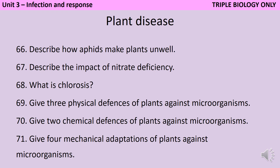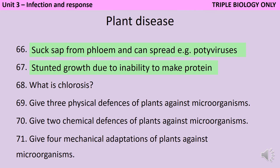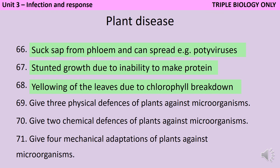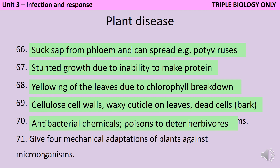Aphids make plants unwell by sucking the sap from their phloem, leaving the plant with less sugar, and also by spreading certain viruses like potiviruses. Nitrate deficiency leads to stunted growth because the plant can't make enough protein. Chlorosis is the yellowing of the leaves that happens when chlorophyll breakdown occurs. Plants have physical defences like their cellulose cell walls, the waxy cuticle on their leaves, and the bark that trees have around them, which is made out of dead cells. Their chemical defences include antibacterial chemicals and poisons to deter herbivores, and their mechanical adaptations include thorns, hairs, leaves that can droop or curl up, and also mimicry.